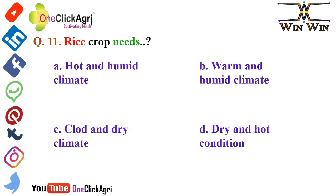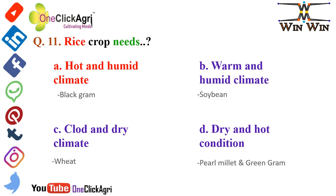The next question: rice crop needs hot and humid climate. Another crop that also requires hot and humid climate is black gram. Soybean requires warm and humid climate. Groundnut requires dry and hot climatic conditions.